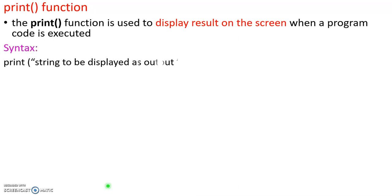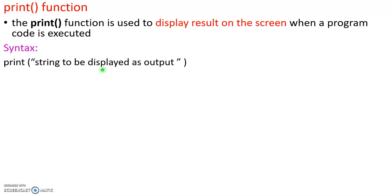The syntax for print is: print('string to be displayed as output'). The text within double quotes is printed as-is to the console. For example: print('Hello') will display 'Hello' on the output screen.